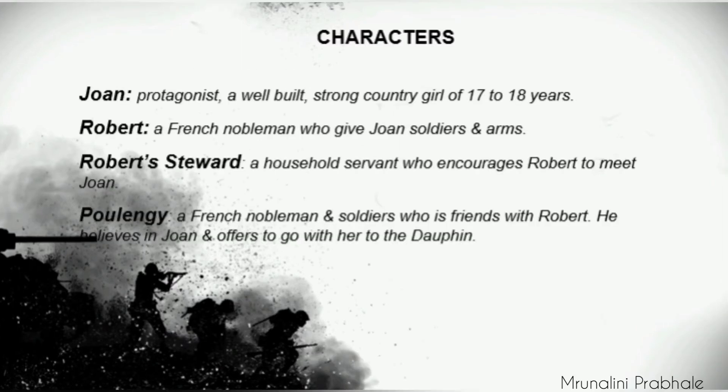Look at the next slide - characters. There are four main characters in the play. The first one is Joan. She is the protagonist, also called the heroine of the play. She is a well-built, strong country girl of 17 to 18 years old. The next important character is Robert, whose full name is Robert de Baudricourt.